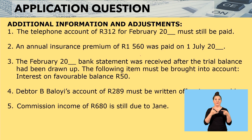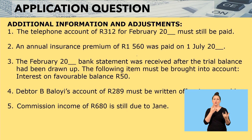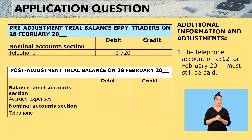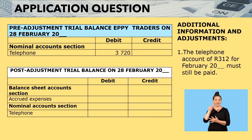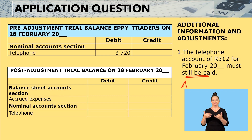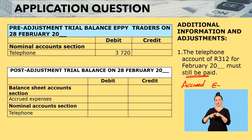Additional information and adjustments. We're not going to read them all at once, but we're going to do them individually. Let's begin with the first one. It reads: the telephone account of 312 for February must still be paid — so we're dealing with an accrued expense.